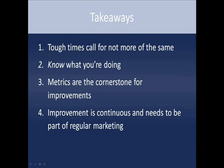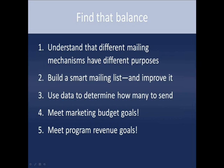Just like checking your health — go visit the doctor every year — measure your marketing activities constantly. Finding that balance is about understanding the differences between mailing mechanisms, audiences, and organizations, and finding your own ground. Build a smart mailing list and let it improve itself and get better as time goes on. Use numbers and data to determine tough decisions like how many to send, and meet marketing budget and program revenue goals by using the ROI. Let those goals tell you what a good ROI is, and your ROI will tell you if you're going to meet those goals.